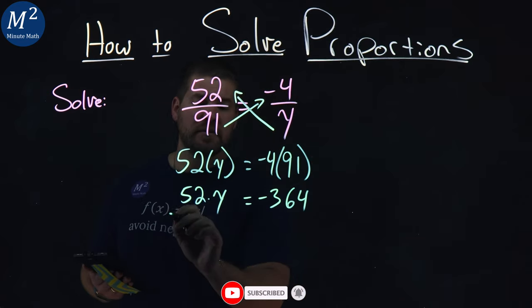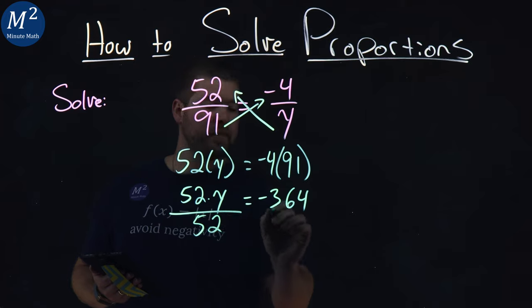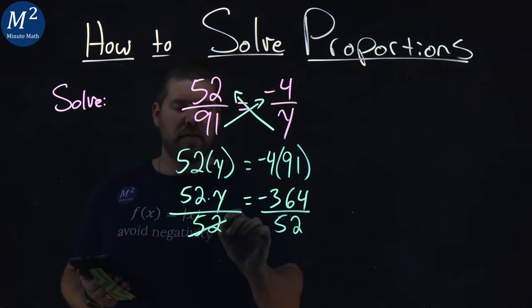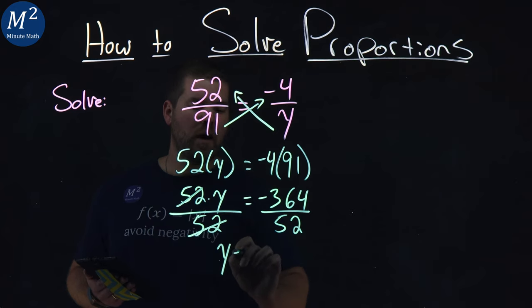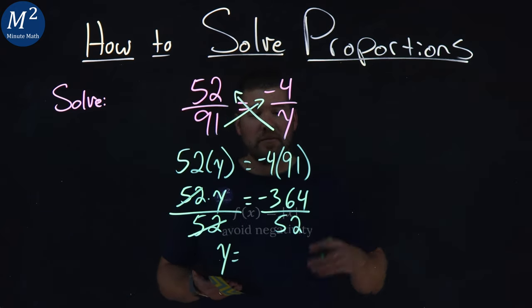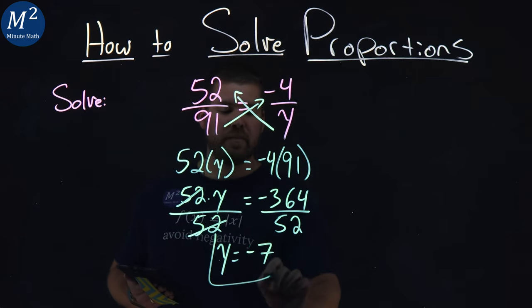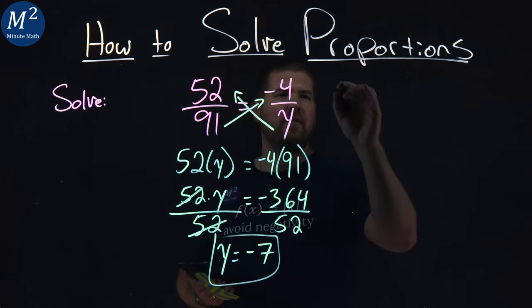From there, I want to divide both sides by 52 to get y by itself. 52 cancels on the left, y is by itself, and negative 364 divided by 52 is just negative 7. So we have our y value.